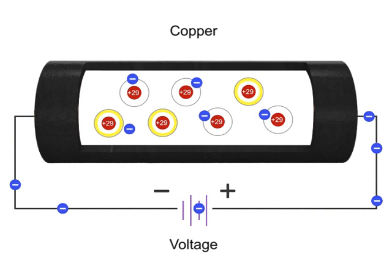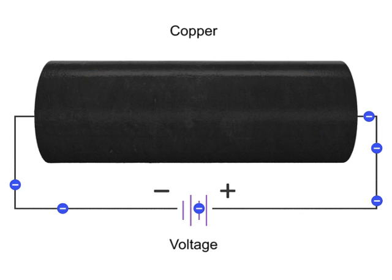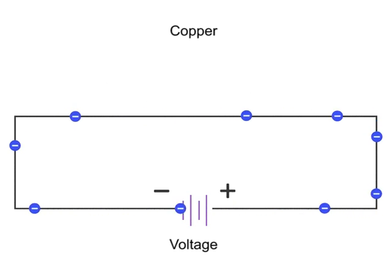Materials that have free electrons and allow electrical current to flow easily are called conductors. Conductors, such as copper, have low resistance to electrical current flow and thus are used extensively in electrical circuits.